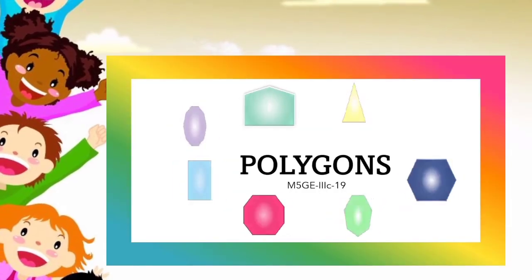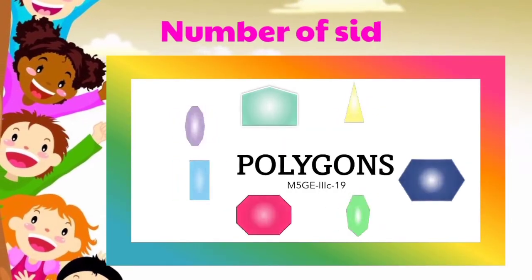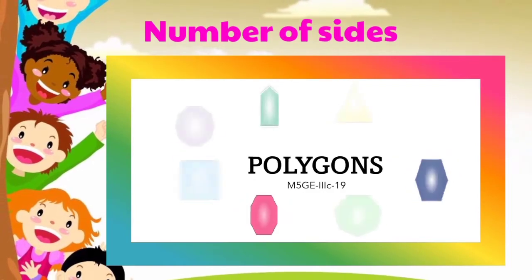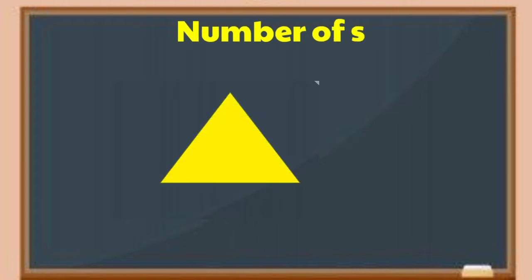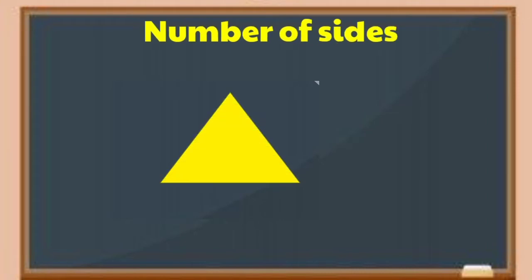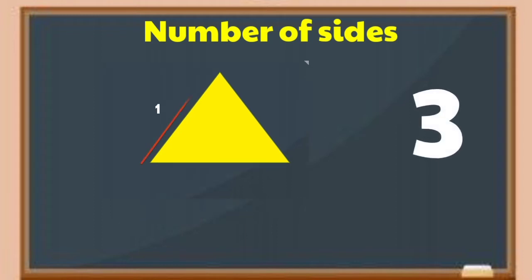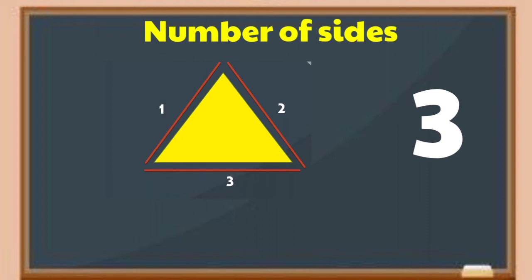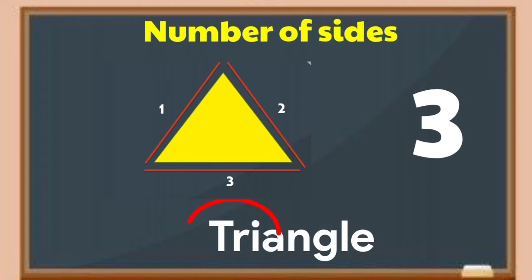Now, you will give the number of sides in each polygon shown on your screen. Figure 1. Yes! It has 3 sides — 1, 2, 3. The figure on screen is called a triangle. From the word 'tri' meaning 3. A triangle has 3 sides.